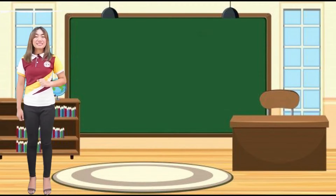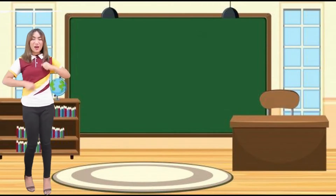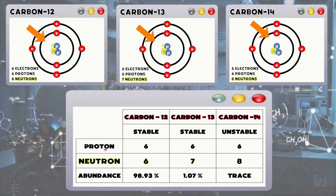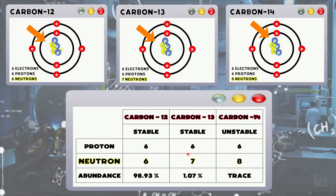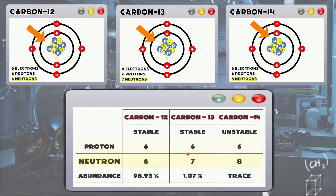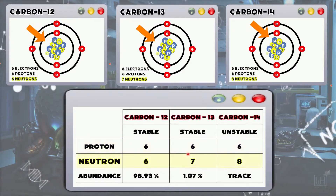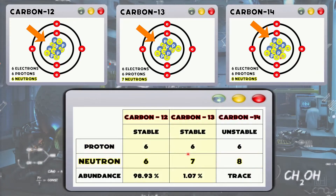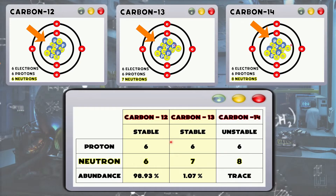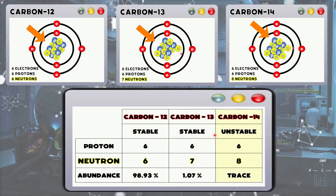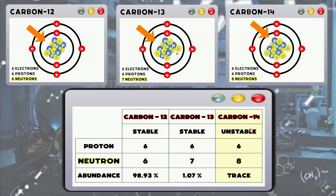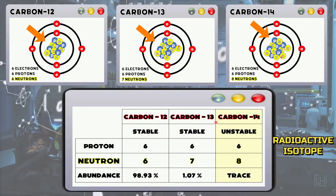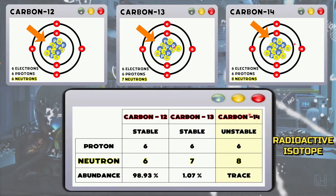Let's have an example — the isotopes of carbon. As you can see, they all have a similar number of protons but different numbers of neutrons, and that's what makes them isotopes. Carbon-12 and carbon-13 are stable isotopes, whereas carbon-14 is an unstable isotope, meaning it acts as the radioactive isotope for carbon.